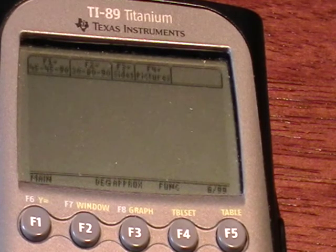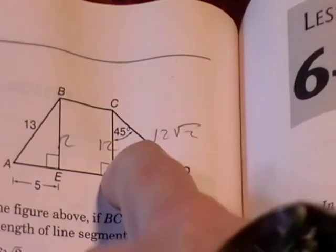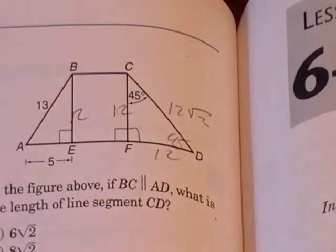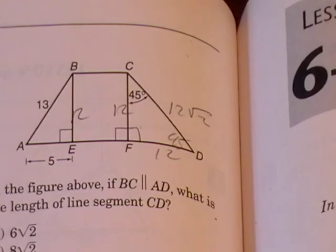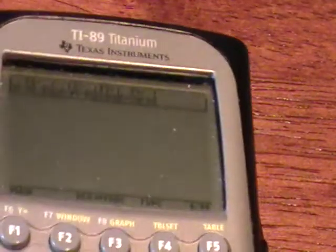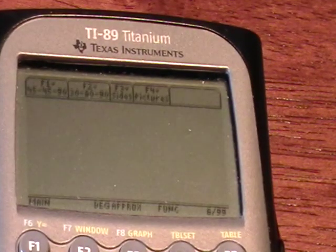So all we need to do is enter 12 for one of the sides of a 45-45 degree triangle, and then use X for our remaining value, which would be the hypotenuse.